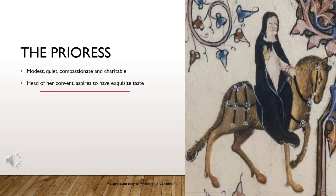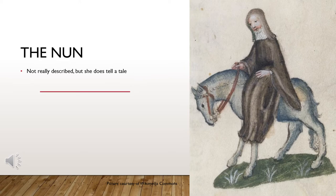With the Prioress, we move into the clergy class. Her job is to take care of a nunnery and all the nuns who live there. She's described as charitable and compassionate, but she also wants to come off as high class — she knows a little French and flaunts it. The Nun herself isn't really described much, but she tells a story about a saint, suggesting Chaucer may have intended to fill in her details later.